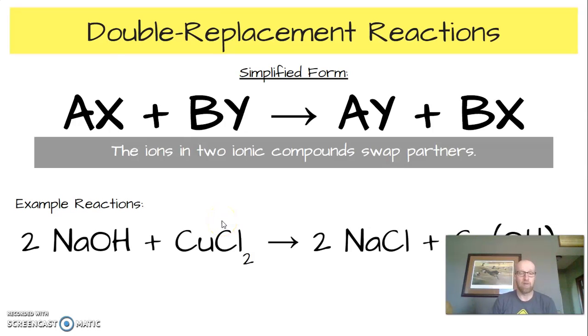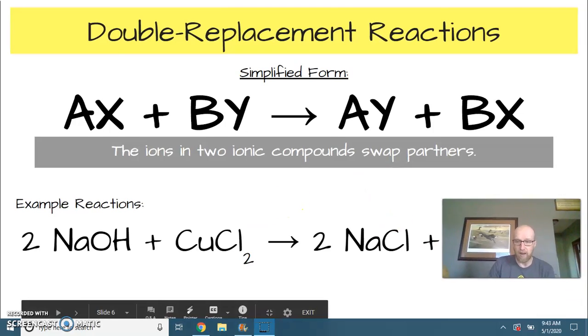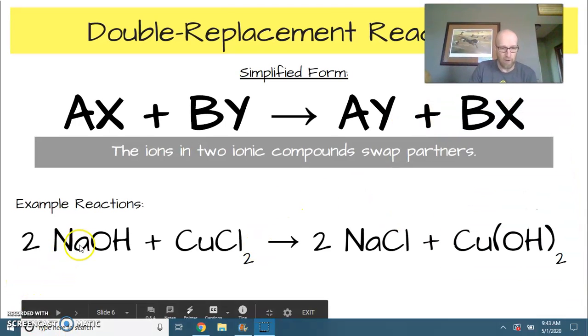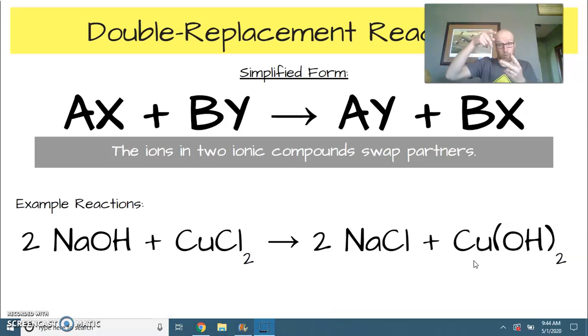So here's an example of that kind of reaction. We got sodium hydroxide and copper 2 chloride makes sodium chloride and copper 2 hydroxide. So you see sodium is dancing with hydroxide here. Copper is dancing with chloride. Now sodium is going to go with chloride, sodium chloride, and copper is going to go with hydroxide, copper 2 hydroxide. That's a double replacement. Both compounds kind of just switch who they're dancing with.